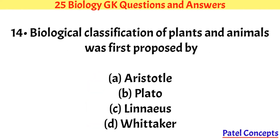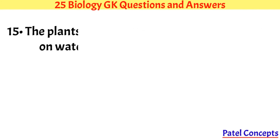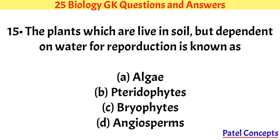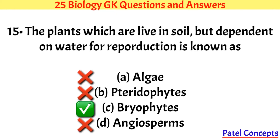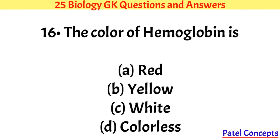Biological classification of plants and animals was first proposed by Aristotle. The plants which live in soil but are dependent on water for reproduction are known as bryophytes. The colour of hemoglobin is red.